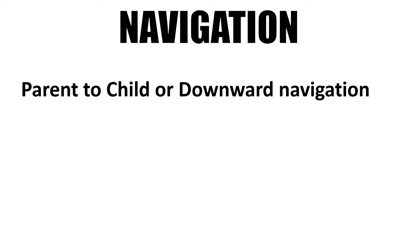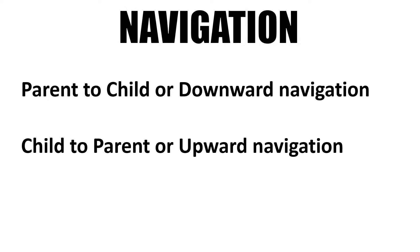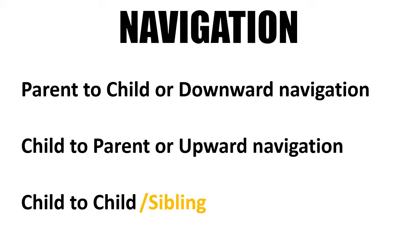When we talk about navigation there are three sorts. First is parent-to-child navigation, which you can also call downward navigation. Second is child-to-parent, or upward navigation. Third is child-to-child navigation — if there are two parallel children, moving from one to another is called sibling navigation or horizontal navigation.